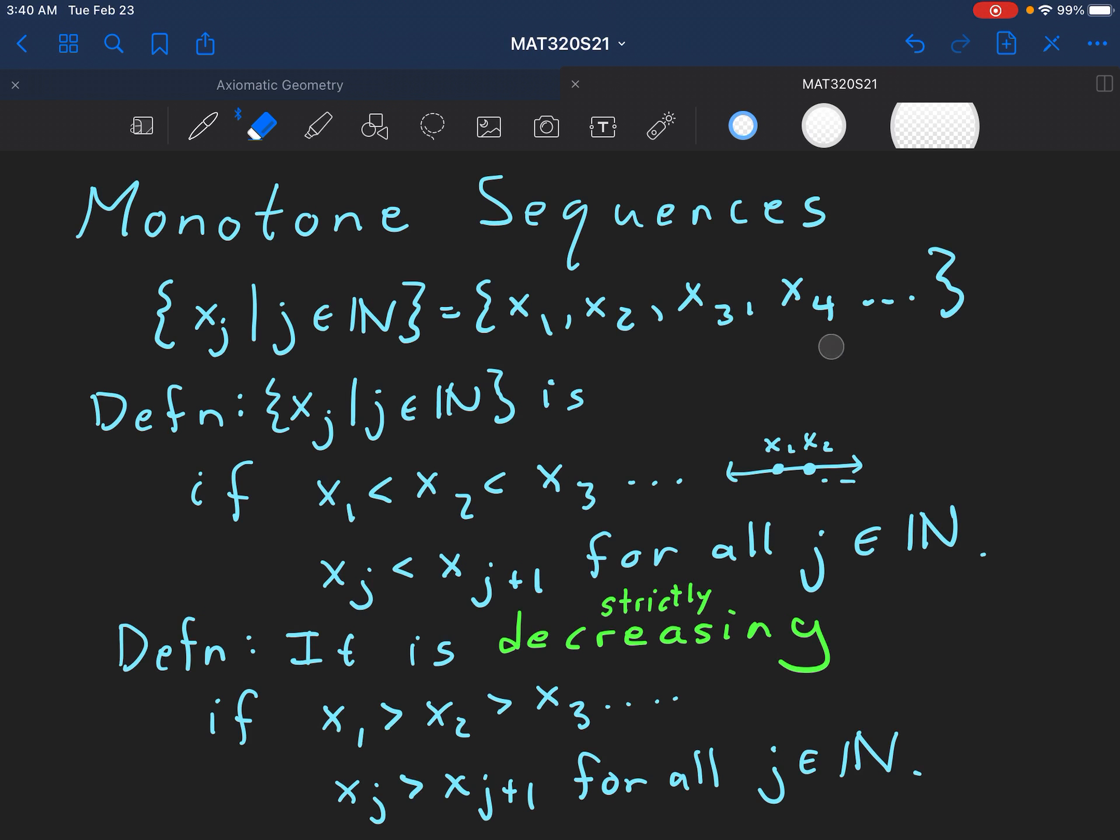Another version of increasing that some people write is that you allow these to be less than or equal signs. And if you do that some people call this increasing, so you call it not strictly, strictly increasing. That's one way you can describe it when you put the inequalities. You can also call it non-decreasing.